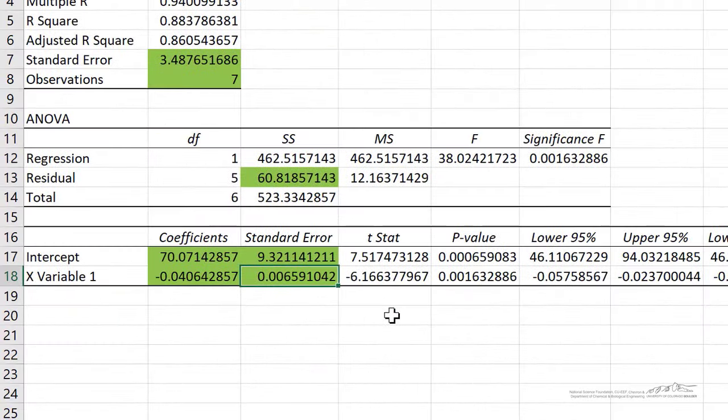If we go back to the regression output you notice that the test statistic of negative 6.17 is exactly what we got using Excel. And now let's go ahead and calculate a p-value. And actually I'm just going to put a green highlight here because now we've calculated that. You could also do the same thing for the intercept.